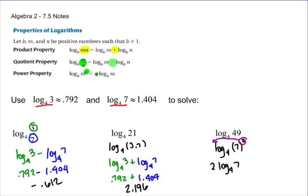When we work that out, we know that seven is 1.404. So I have two times 1.404. When you multiply that on your calculator or by hand, you get 2.808.